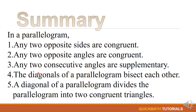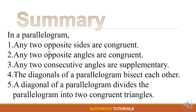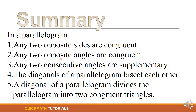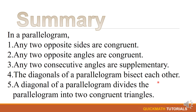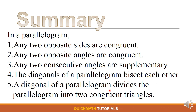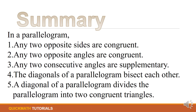To sum it up, the properties of a parallelogram are: any two opposite sides are congruent; any two opposite angles are congruent; any two consecutive angles are supplementary; the diagonals of a parallelogram bisect each other; and a diagonal of a parallelogram divides the parallelogram into two congruent triangles.